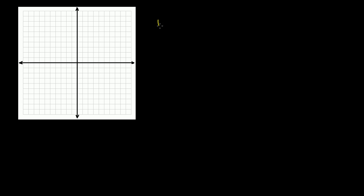Let's graph another rational function, because you really can't get enough practice here. So let's say we have y is equal to x over x squared minus x minus 6. The first thing we might want to do is just factor this denominator so we can identify our vertical asymptotes, if there are any.